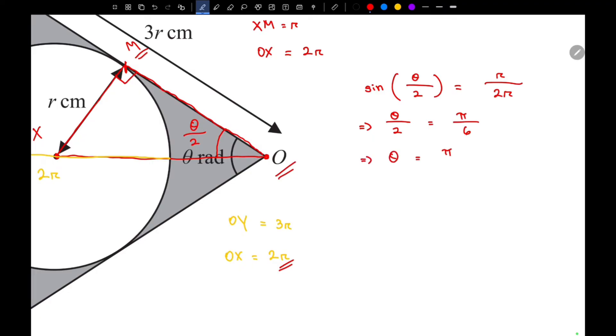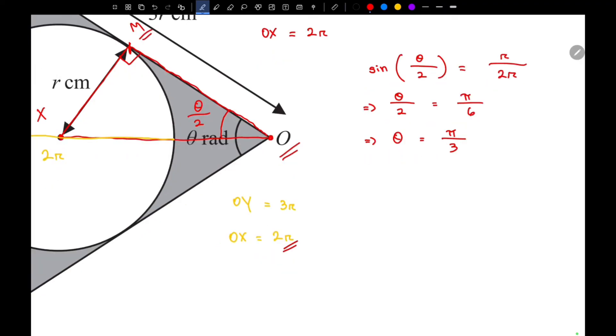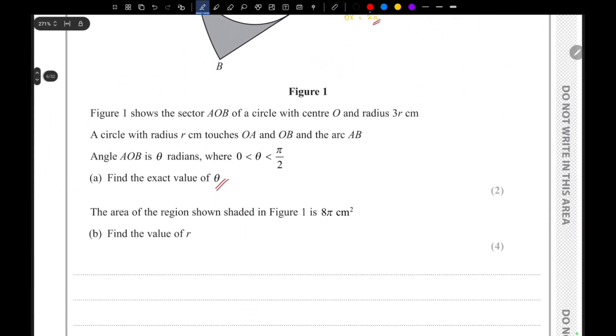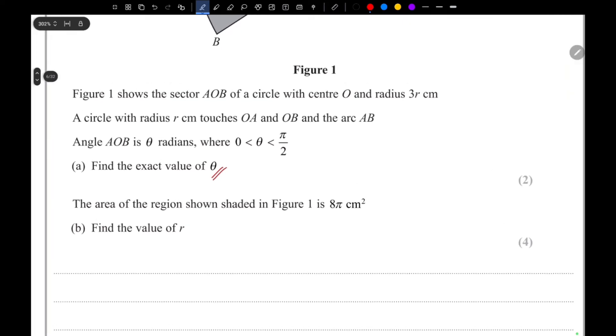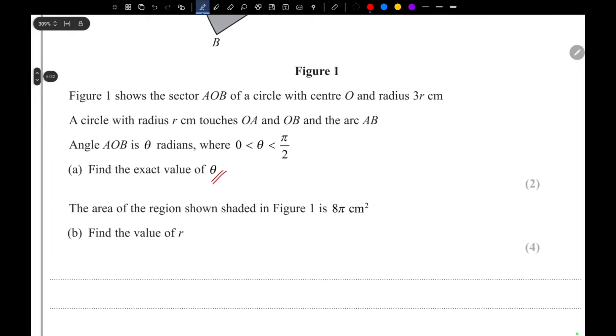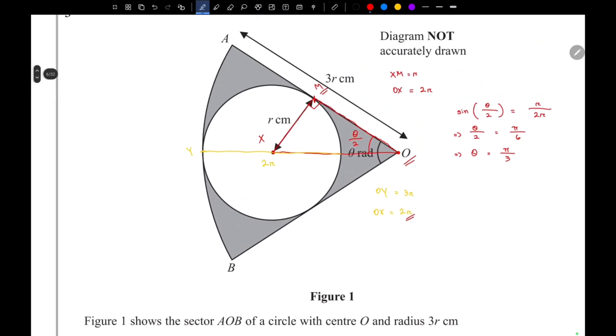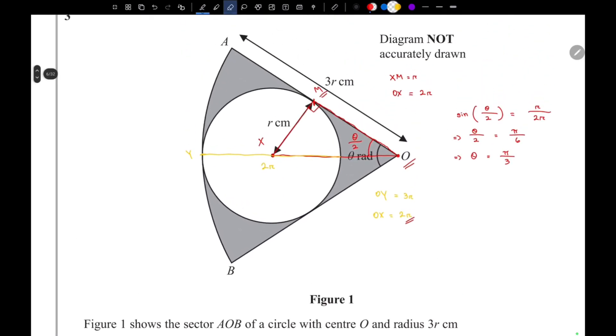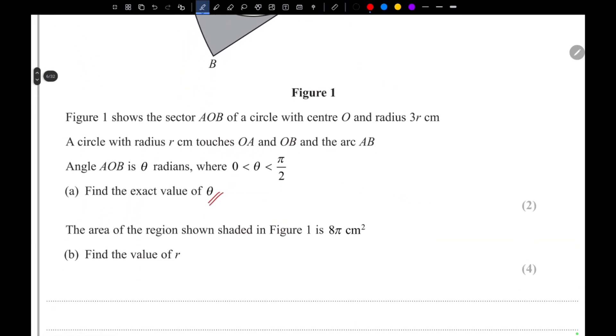So that's it for the first part. Now for the second part, the area of the region shown shaded in figure 1 is 8π. So we know the area of the shaded region to be 8π - that's what they have given in the question.